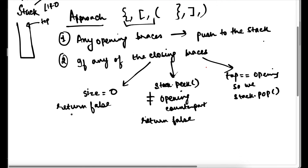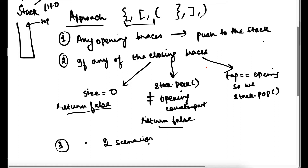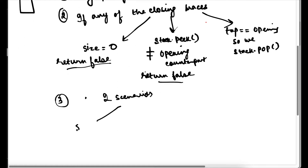After the loop, we check the final condition. If the stack size equals zero — everything that was pushed was also popped — we return true, meaning we had a valid parenthesis. For example: one opening brace pushed, another pushed; when the matching closing came, they paired and were popped, then the next pair was also popped. Ultimately the stack contained nothing, so we return true.